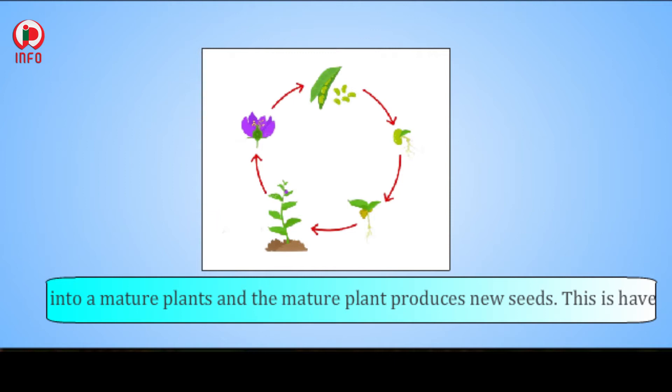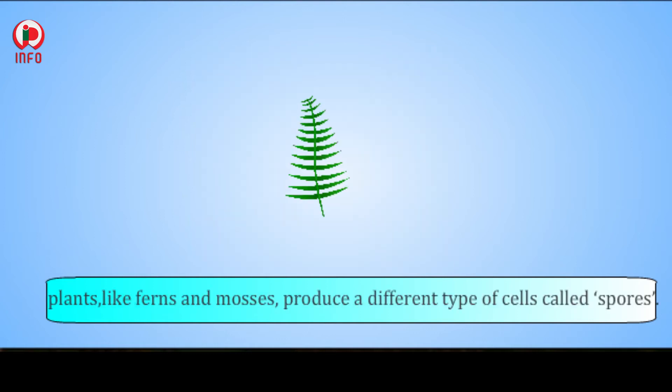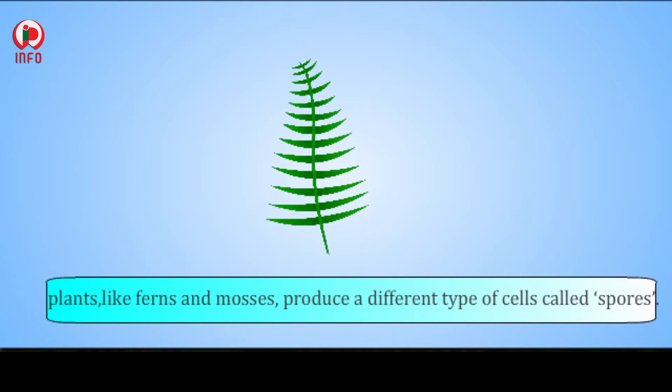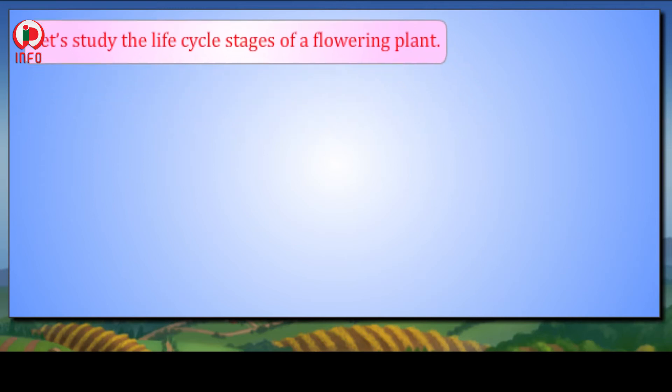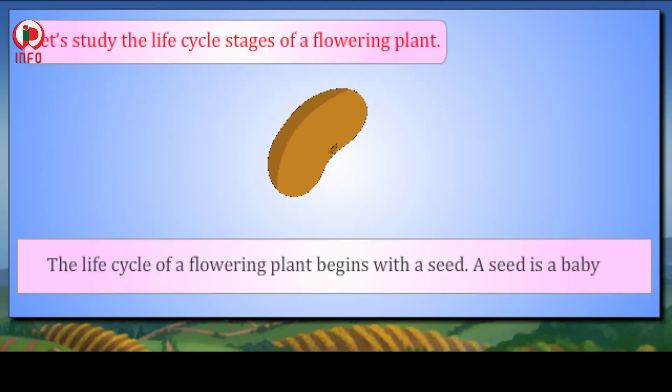Like all living things, plants too have a life cycle. They begin as a seed, grow into a mature plant, and the mature plant produces new seeds. This is how the cycle continues. However, not all plants produce seeds. Some lower plants like ferns and mosses produce a different type of cell called spores. These plants also have a life cycle, but they do not produce seeds.